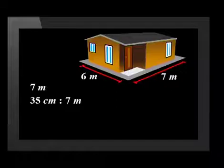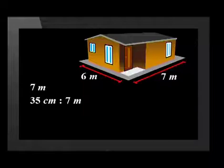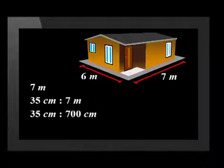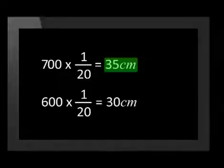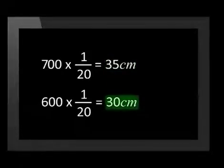We want to use about 35 cm to represent 7 m. A scale ratio must be in the same units, so 7 m becomes 700 cm. By dividing both sides by 35 we get the ratio 1:20. Remember that a ratio is written without units as the units are the same and they have cancelled out. So to draw a scale plan of the house, the floor plan and all the elevations should be drawn to a scale of 1:20. That means that the length of the plan will be 35 cm and the width of the plan will be 30 cm.